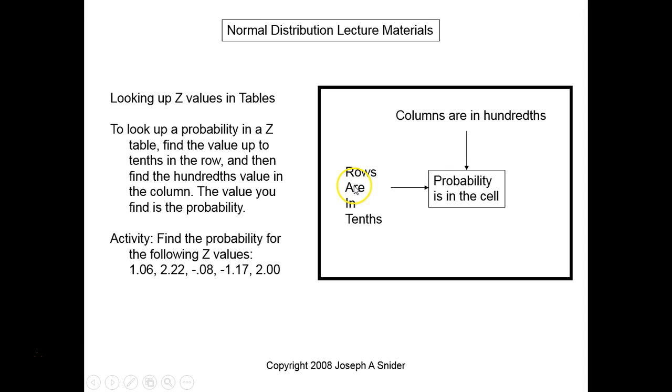Within a Z lookup, the rows are tenths. Like if you had negative 1.17, it would be the row of negative 1.1, and then the 07 is going to be your column for the hundredths.